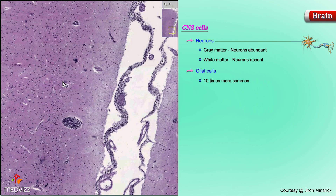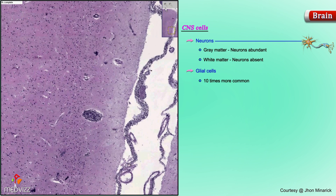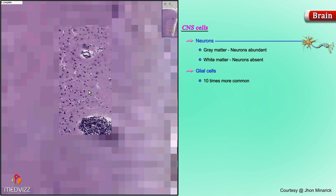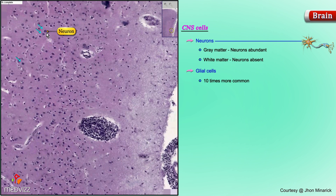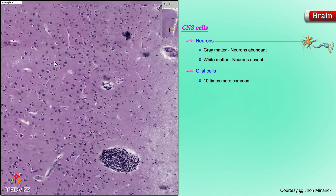Let's look at some of the cells in the brain. The large cells which you see in this field — here and here and here — some of them may look like their cytoplasmic processes are extending as either axons or dendrites, which you can't see in a routine stain. These are neural cells. These are neurons. And here's an area where there are a lot of neurons.